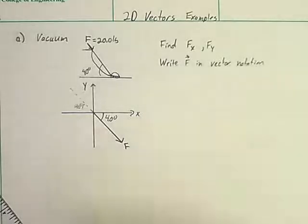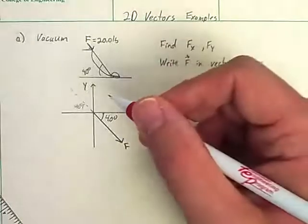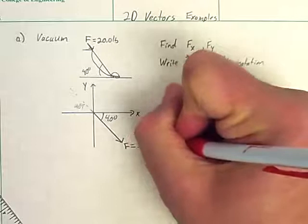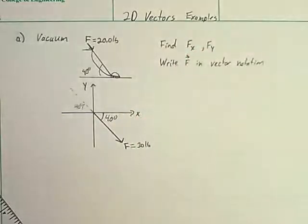So what we want to do with these force problems is make sure we draw all the forces. Try to make it to where everything is from the axis if we can. We want to label the forces. We label this as force F. If we know it, we can go ahead and say that we know this is 20 pounds.